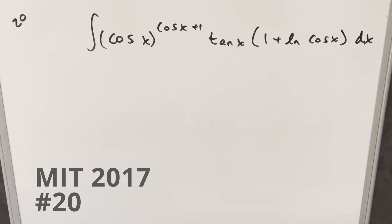Okay, I think it's a pretty fun integral here today. We got this from the MIT Integration Bee 2017, number 20. We have the integral of cosine x to the cosine x plus 1, tan x, times 1 plus natural log cosine x dx.